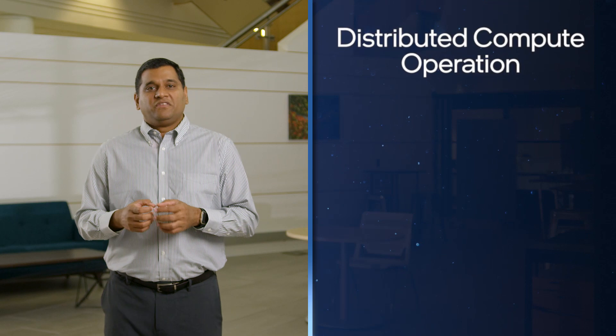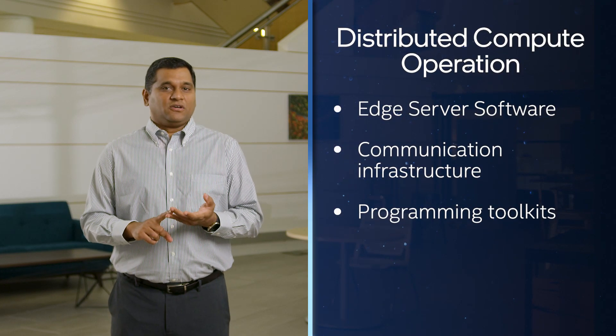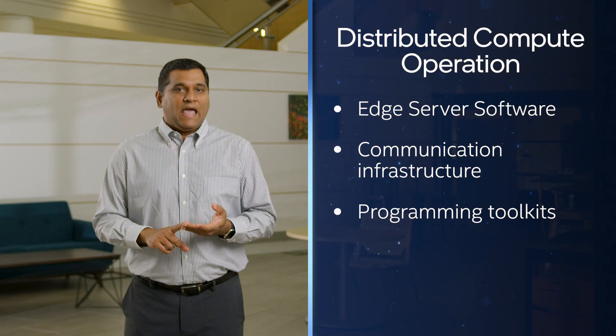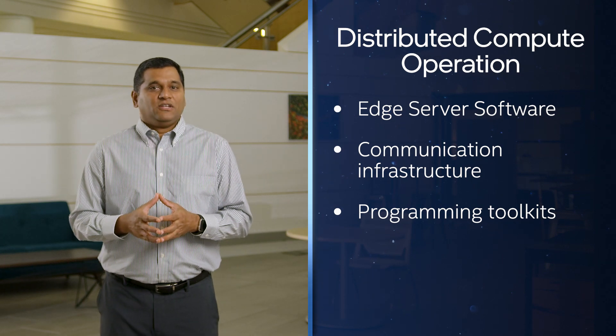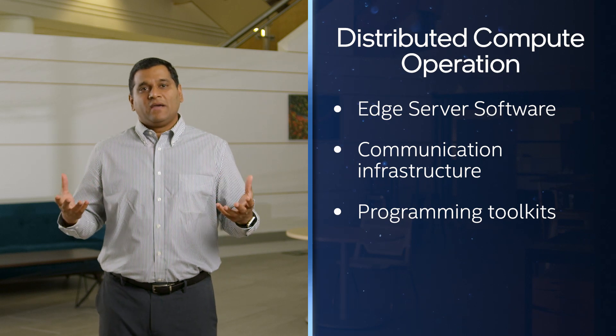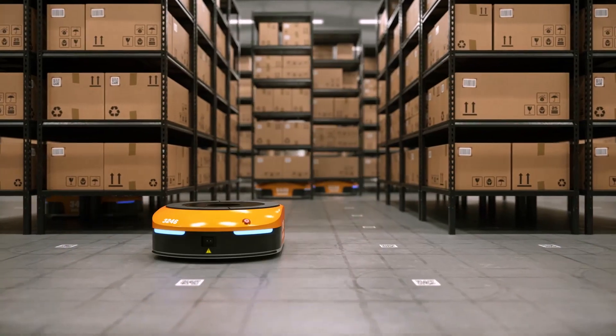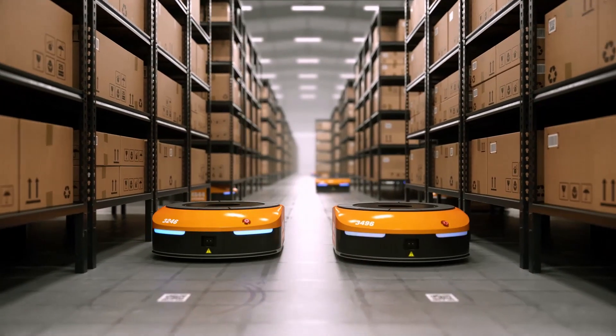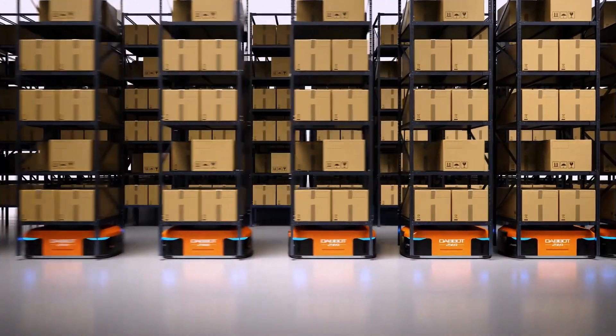The third area of focus is the end-to-end distributed compute operation of the robotic system spanning from robot to edge to cloud. This includes edge server software, communication infrastructure to connect to Wi-Fi and 5G, and programming toolkits to host a wide range of services such as telemetry, AI, media processing, and security. It also provides the software infrastructure for customers to process high-bandwidth data collected from multiple sensors or robots at 5G speeds.